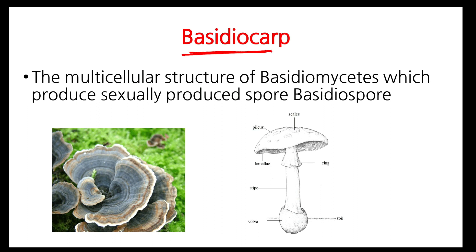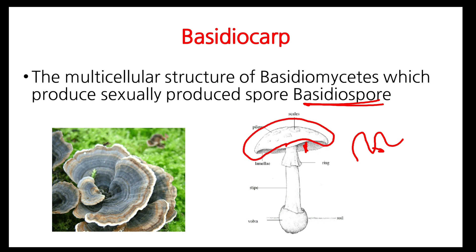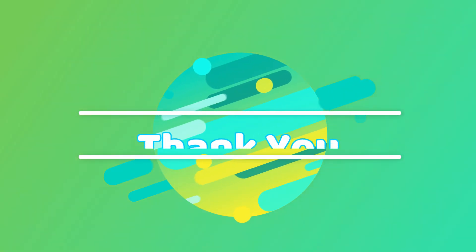Basidiocarp: the mushroom we eat is a basidiocarp. Similarly, the bracket-shaped structures seen on old trees are also basidiocarps. In basidiocarps, gills are present on the underside, and basidiospores are produced in those gills. These basidiospores are sexual spores. The structure from which basidiospores are formed is called the basidium. That is all for this video. Thank you.